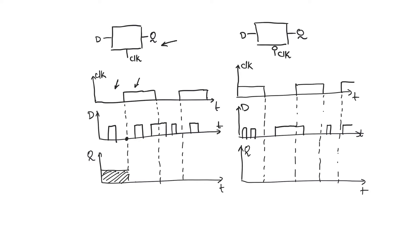As soon as we enter the one phase of the clock, D is equal to zero and therefore Q is equal to zero. Then D goes up to one, Q will follow it. D goes back to zero, Q goes back to zero. D rises to one and Q follows it.